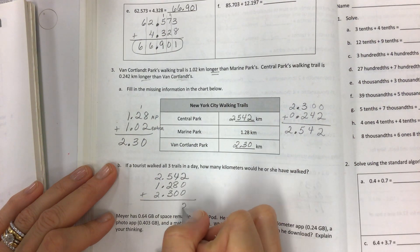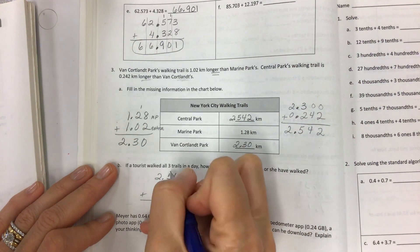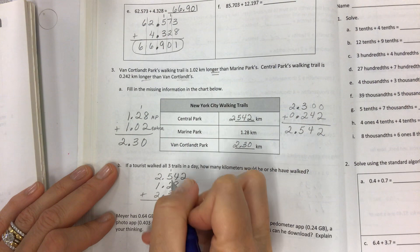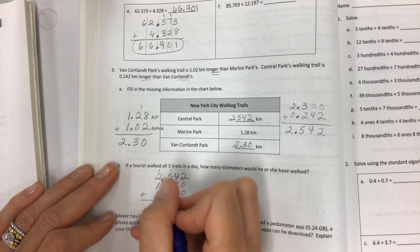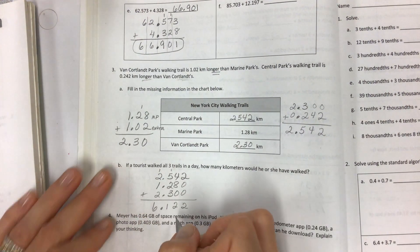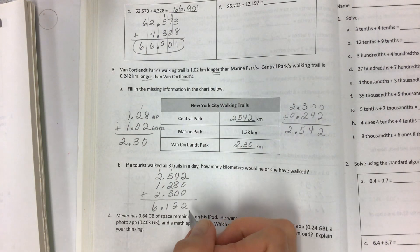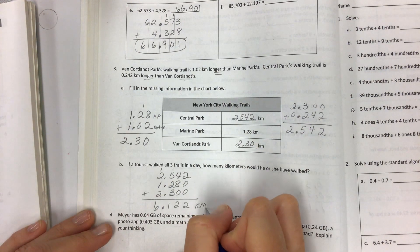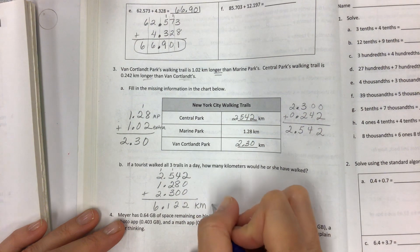Don't forget to label your answer. Always label everything. 5, 6, 7, 8, 9, 10, 11—6.122 kilometers. Don't forget to put the kilometers of walking trails.